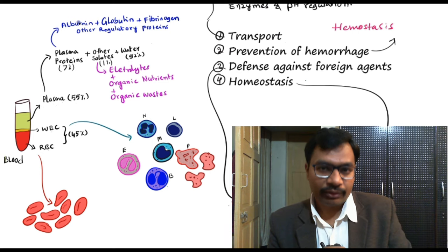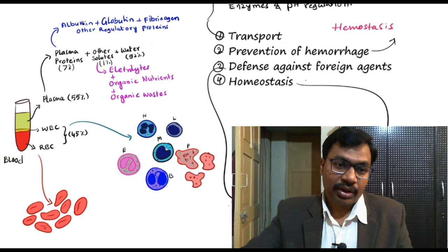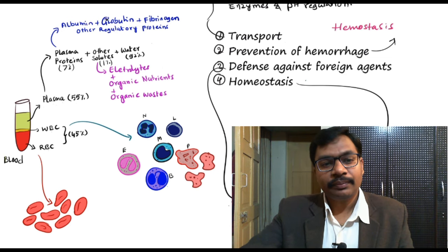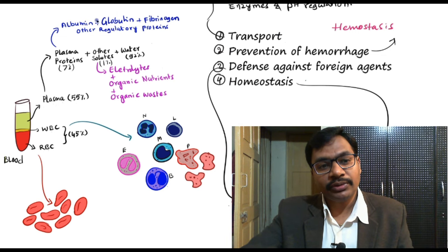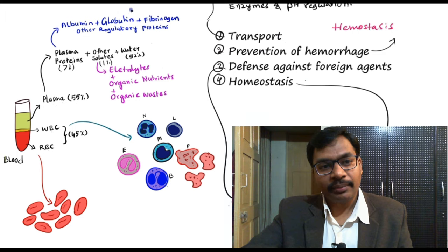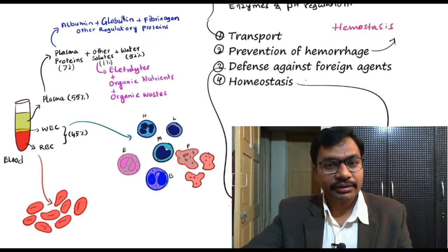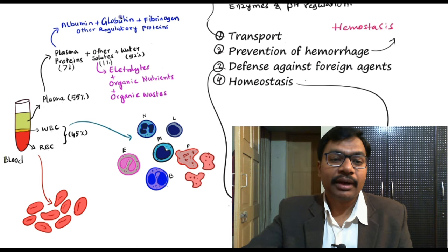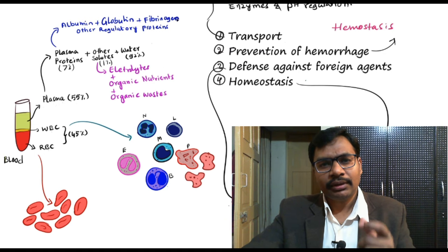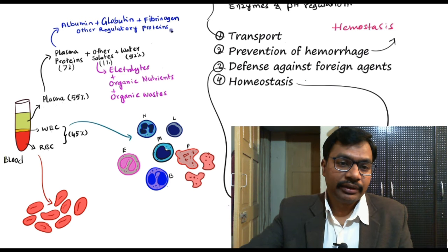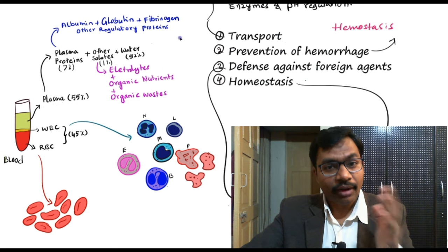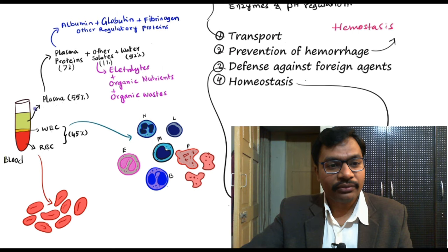Plasma proteins present in plasma include albumin, globulin, and fibrinogen. Albumin is a protein that carries the majority of hormones and other substances. Globulin includes alpha, beta, and gamma globulins — alpha and beta globulins are transporting proteins, while gamma globulins are antibodies. Fibrinogen is a very important protein that participates in the blood clotting process. Other regulatory proteins like enzymes and hormones are also present, all comprising around 7 percent of total plasma.